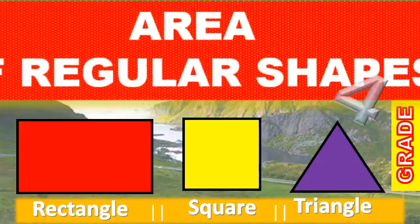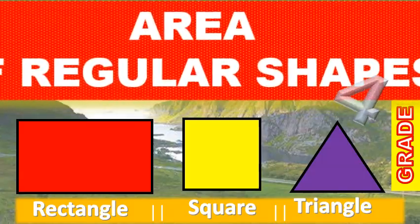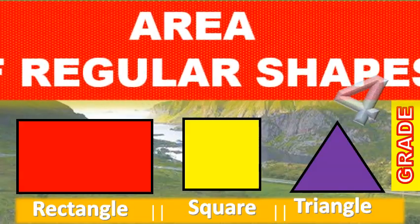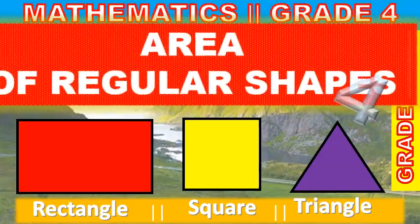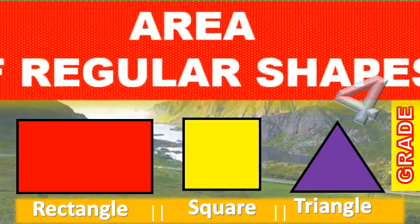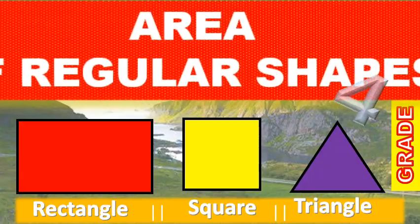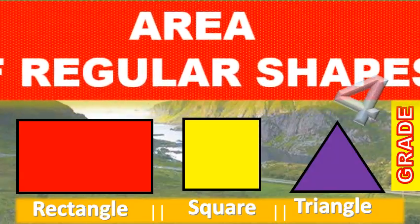Area is the surface covered by a shape or an object. Can you remember the regular shapes we learnt last time? The regular shapes are a rectangle, a square, a circle, and a triangle. Let us calculate the area of a rectangle.